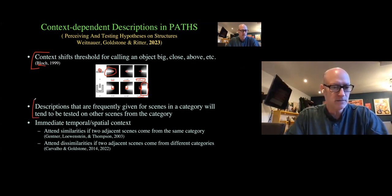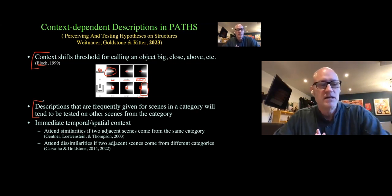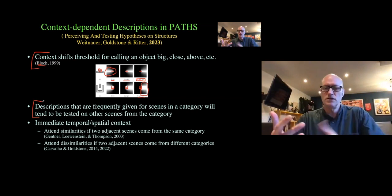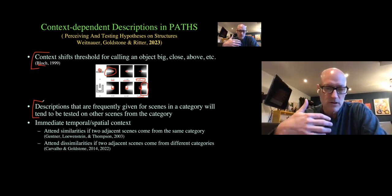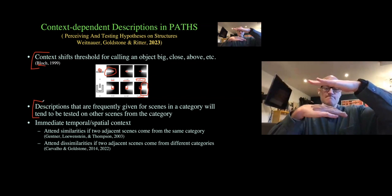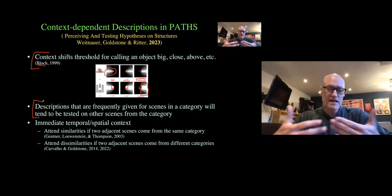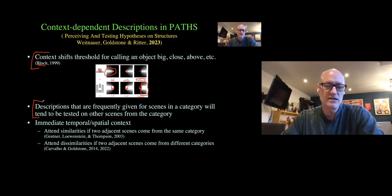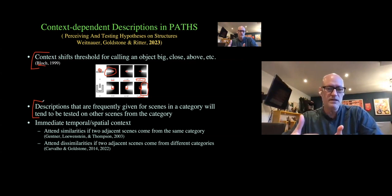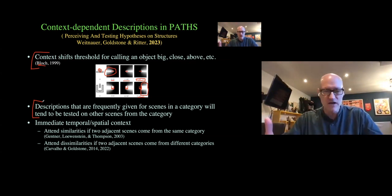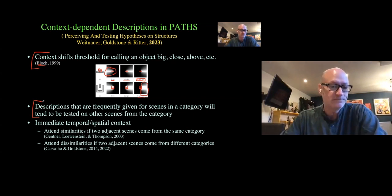The bigger context dependency used all the time in PATHS is that descriptions frequently given for scenes in one category will tend to be tested for other scenes from that same category. Once you notice something like 'those lines seem parallel at the beginning and end,' you'll tend to apply that description to other scenes in the same category — even complex scenes with lots of objects. The final kind of context sensitivity concerns the immediate temporal and spatial context.